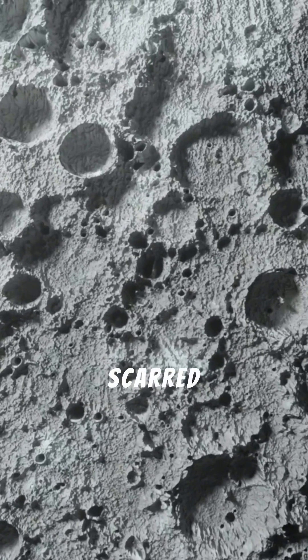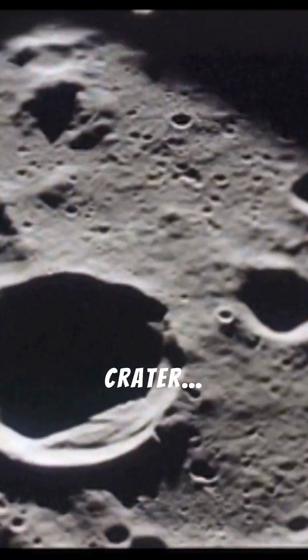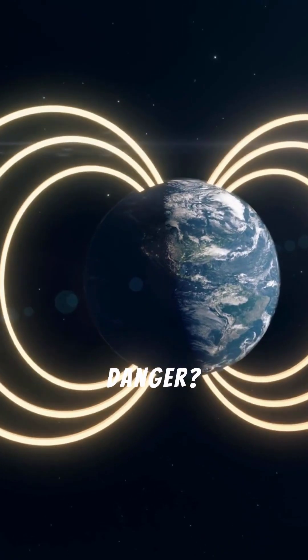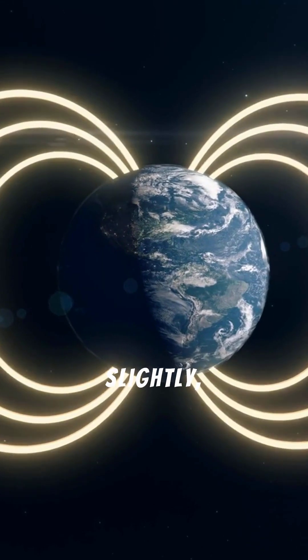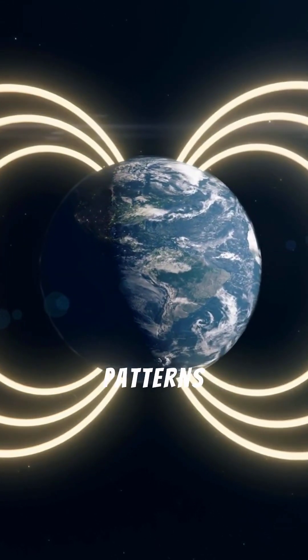The Moon's surface would be scarred by a new, enormous crater. But the real danger? The Moon's orbit could shift, even slightly, disrupting tides and weather patterns on Earth.